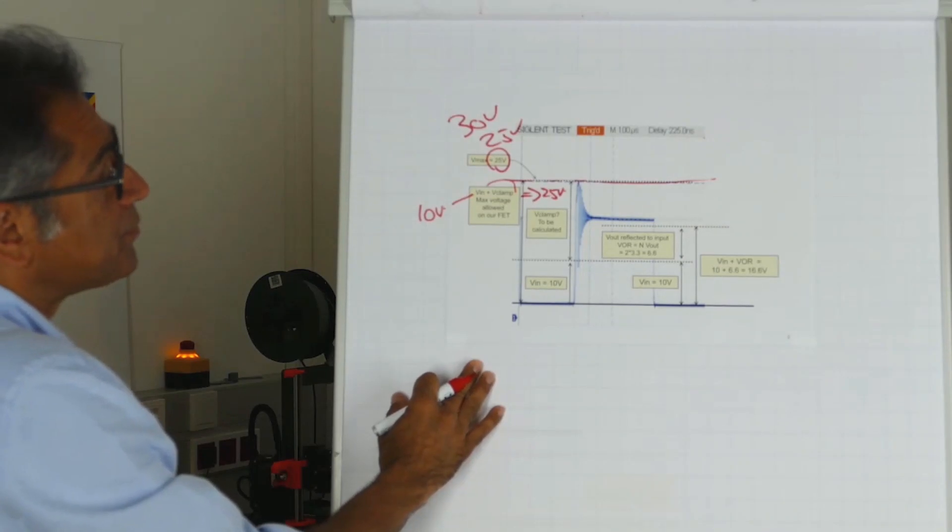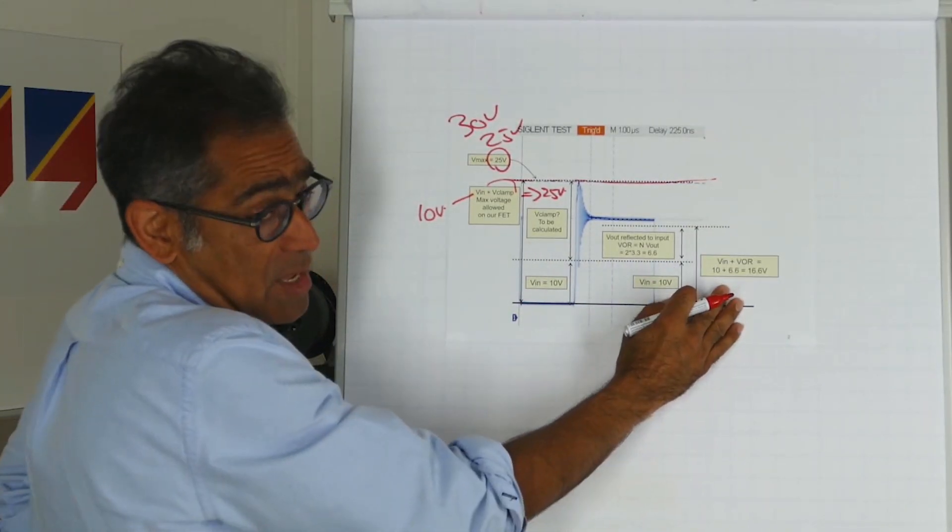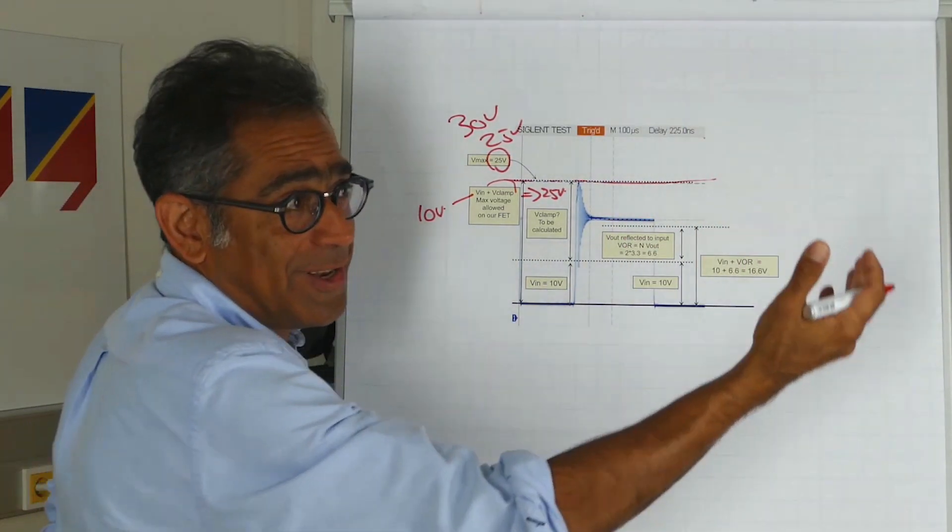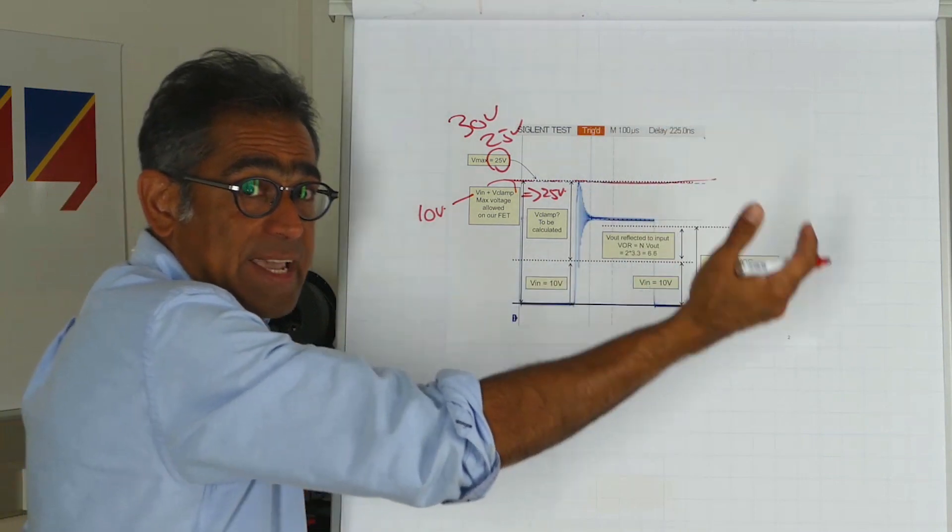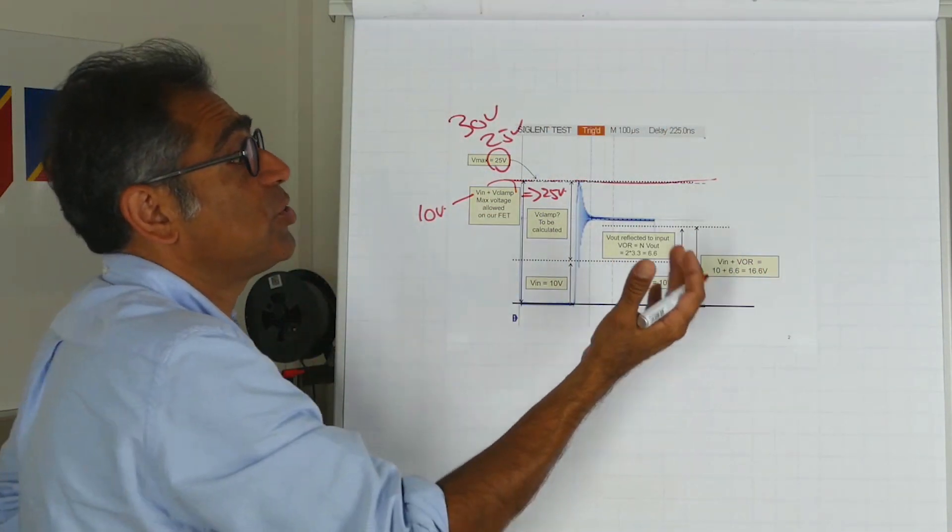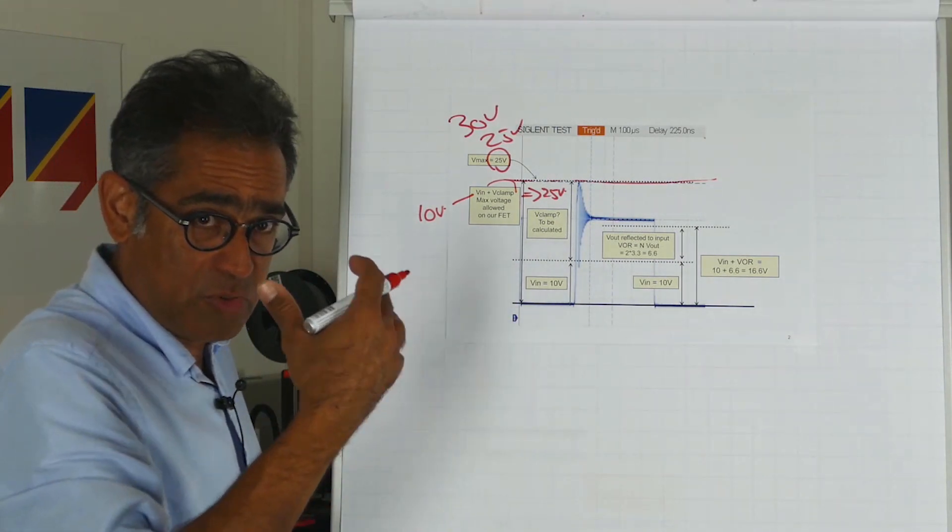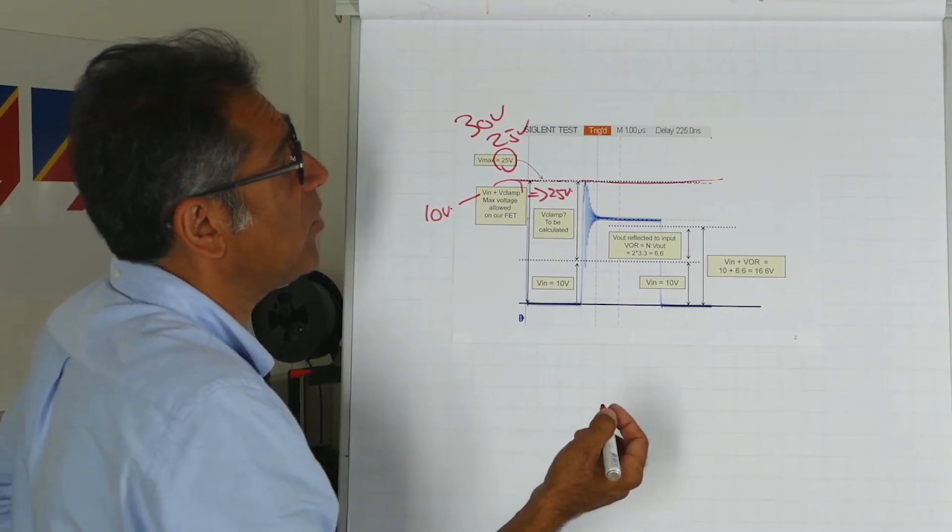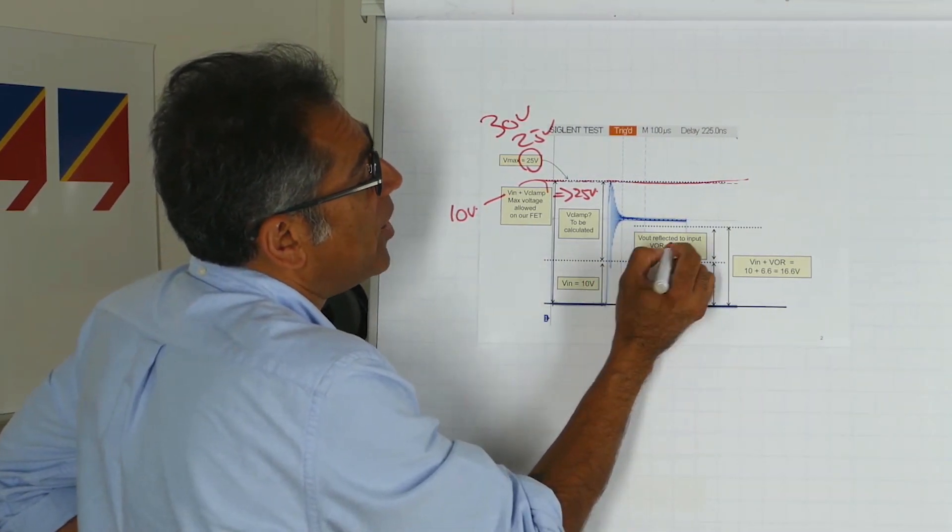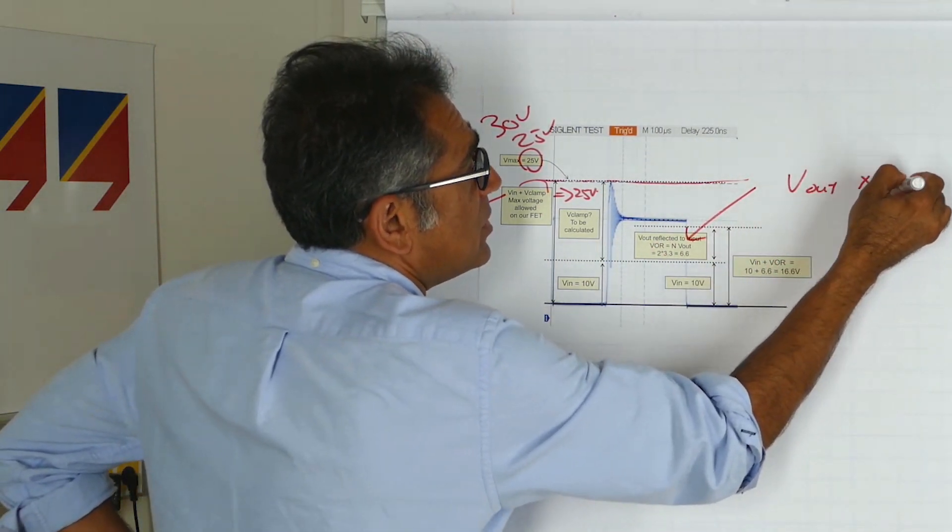Okay, then another few things that you need to know. In a flyback converter, the output voltage is going to get reflected from secondary onto the primary, so that voltage also needs to be considered. Again, we did another video where we talked about transformer and parameter referral, and we know that the output voltage referred to primary is V-out times the turns ratio.